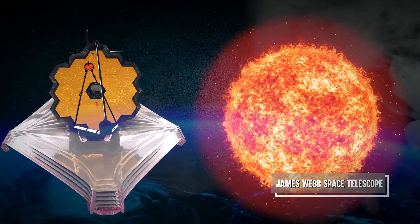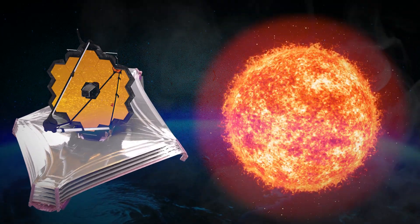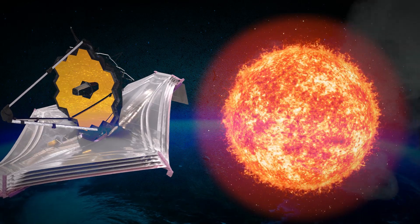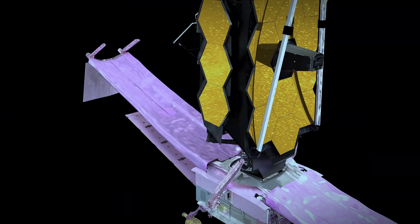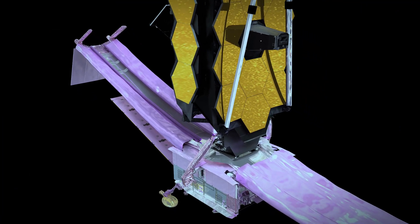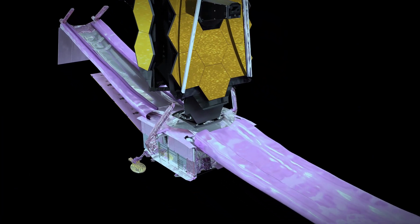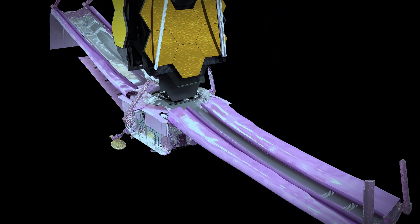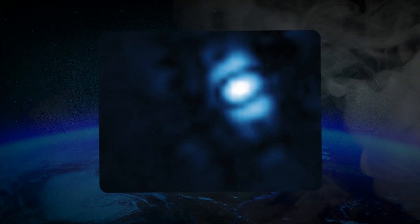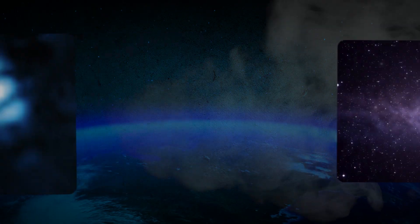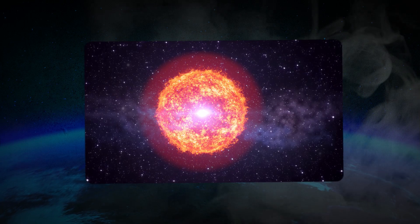Cue the James Webb Space Telescope, our cosmic detective, who has been watching Betelgeuse's every move with its high-tech instruments. From the near-infrared camera to the mid-infrared instrument, the JWST has been collecting a cosmic treasure trove of data. Imagine high-res snapshots, detailed analysis of the star's light spectrum, and detecting the tiniest changes in brightness and temperature.